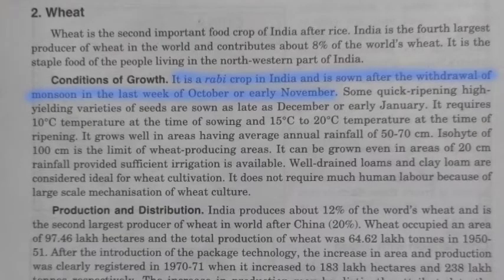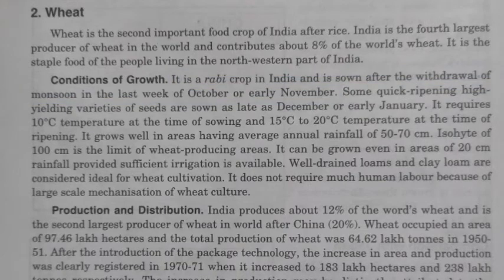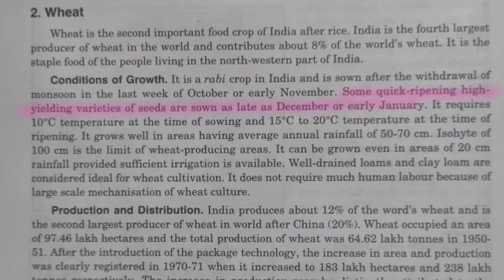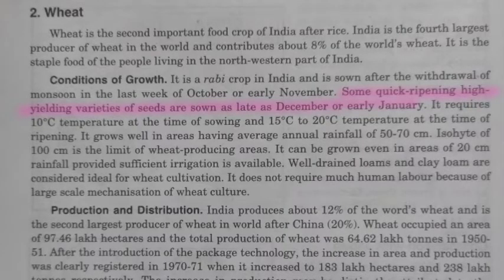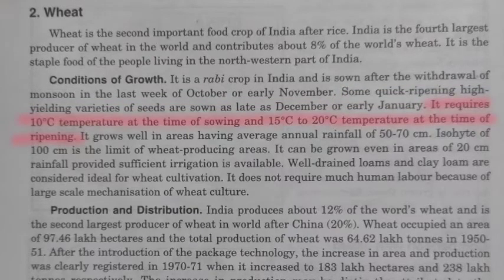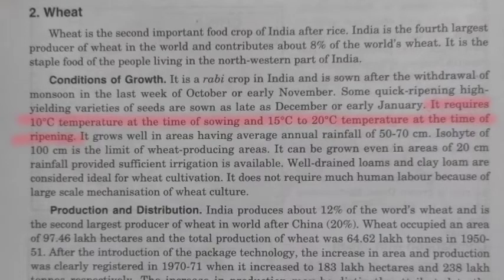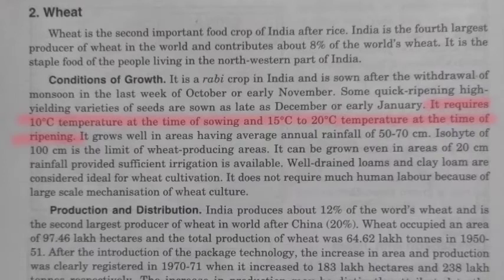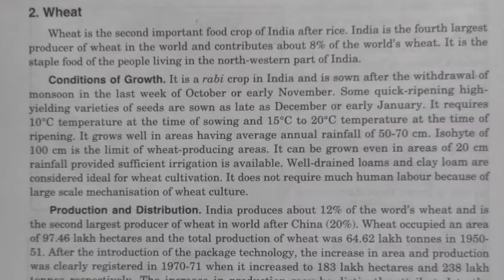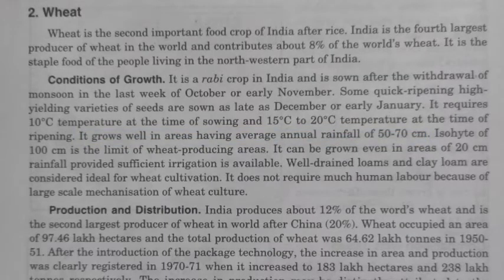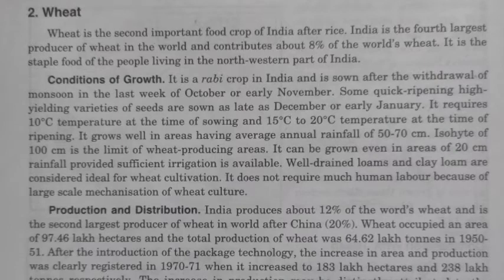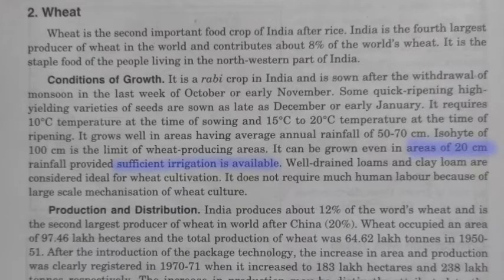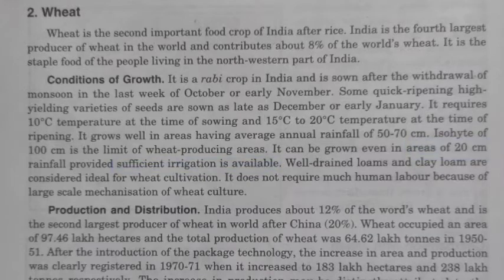Quick-ripening and high-yielding hybrid varieties of wheat seeds are sown in late December and early January. Wheat requires around 10 degrees Celsius at the time of sowing and 15 to 20 degrees Celsius at the time of ripening. Around 50 to 70 centimeters of annual rainfall is needed, but it can also be grown with as little as 20 centimeters of rainfall with sufficient irrigation. Loamy soil is ideal for wheat cultivation.